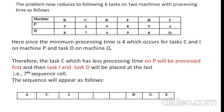After assigning tasks E and G, we have six remaining tasks. From these six tasks, the minimum processing time is 4, which appears in three places: for tasks C, I, and D. Tasks C and I correspond to machine P, and task D corresponds to machine Q. Since C and I are on machine P, they will be arranged in the forward direction, and D will be arranged in the backward direction. Task C, which has less processing time on P, will be processed first, then task I, and task D will be placed last.